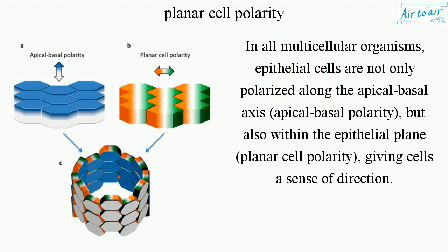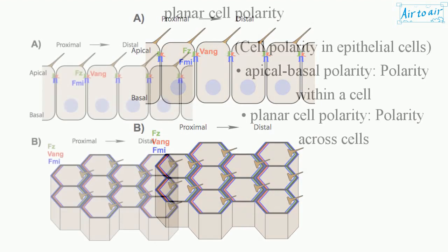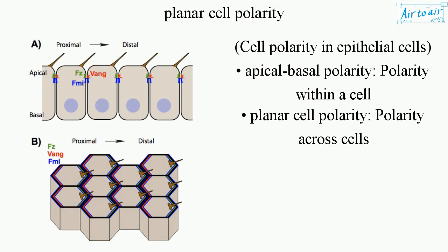In all multicellular organisms, epithelial cells are not only polarized along the apical-basal axis (apical-basal polarity), but also within the epithelial plane (planar cell polarity), giving cells a sense of direction. Cell polarity in epithelial cells includes apical-basal polarity — polarity within a cell — and planar cell polarity — polarity across cells.